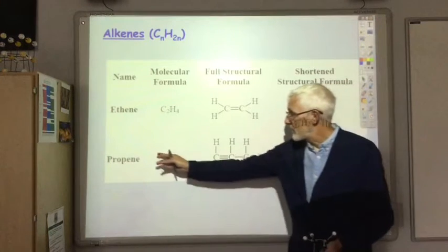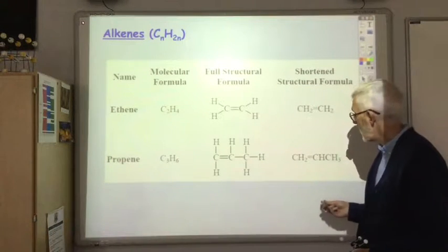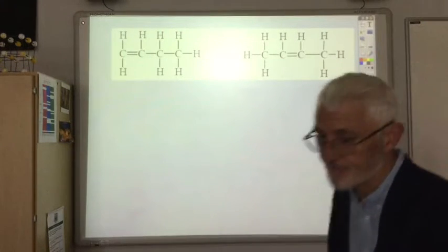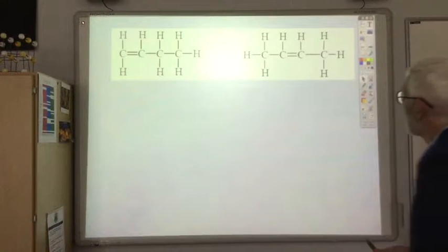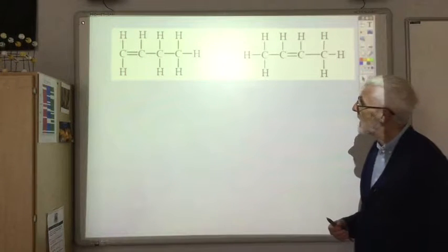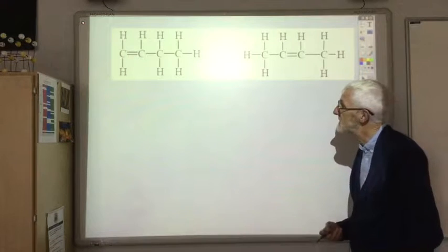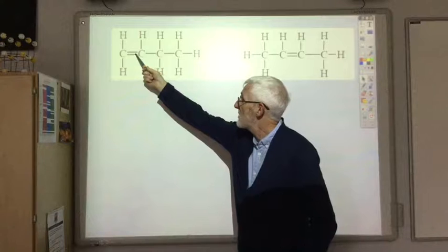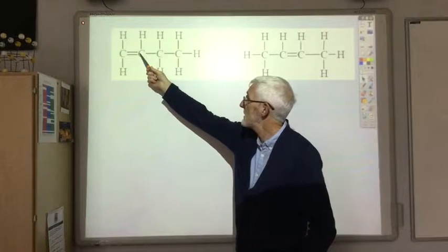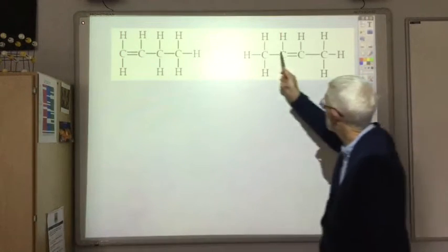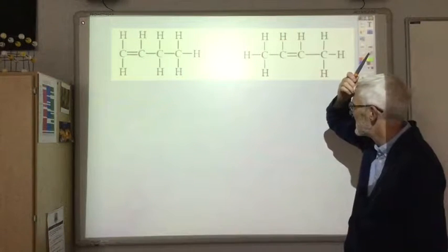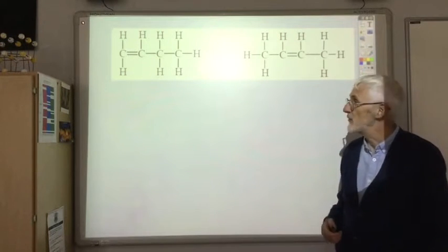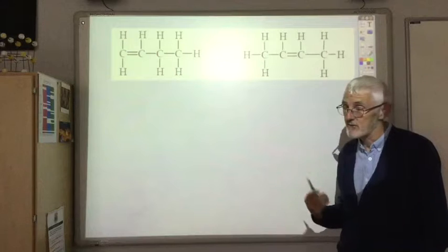Three carbons you get propene, and then when you get to four carbons this is the first time you've got a choice. You can choose where the carbon-carbon double bond goes. You could have the carbon-carbon double bond between the end carbon and the one adjacent to it, or it could be between the two carbons in the middle. So these are isomers - they're both forms of butene, both C4H8, but they have slightly different structural formulas.